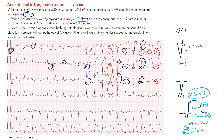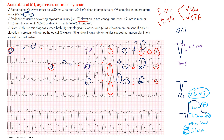To review anterolateral MI: the things you need to see to call this a myocardial infarction rather than just an injury are the Q waves as well as ST segment elevation. Specifically for anterolateral MI, you can see them in lead I and aVL as well as V2 through V6. You'll also notice reciprocal changes forming in the inferior leads.